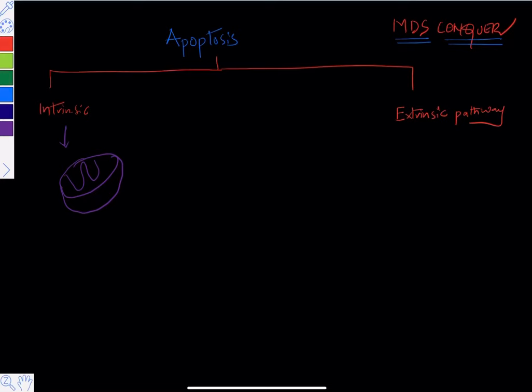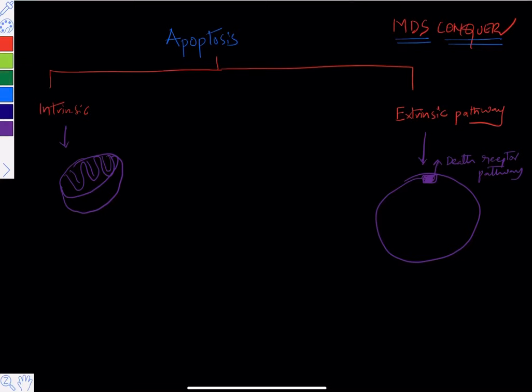The intrinsic pathway starts inside the mitochondria, because it is inside the cell. Whereas the extrinsic pathway starts at the cell membrane receptors - sometimes called the death receptor pathway - that is outside the cell. So: inside the cell is mitochondria/intrinsic; outside the cell is the death receptor/extrinsic pathway.